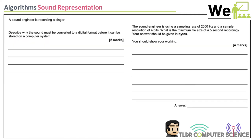For sound representation, there are two factors: sample rate — how often we test the wave, measured in hertz — and sample resolution, which is how many bits we use to measure the amplitude of the wave. A sound engineer is recording a singer using a microphone, converting analog waves into digital ones and zeros.